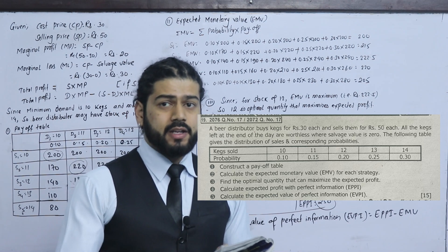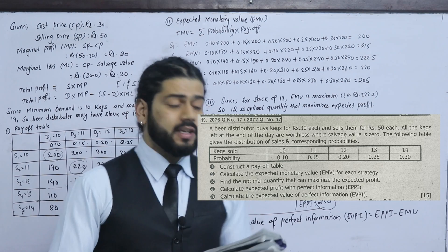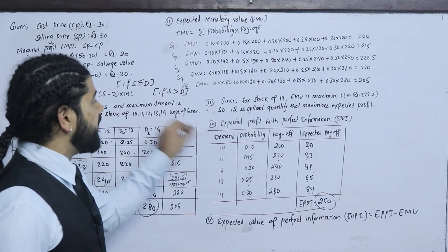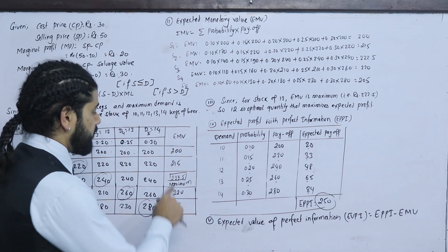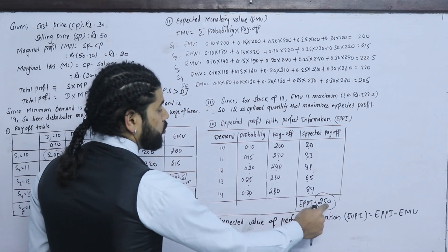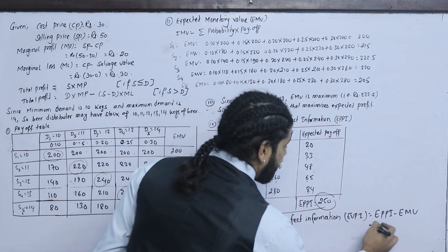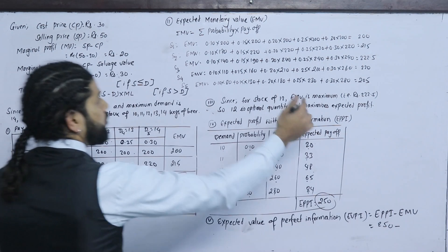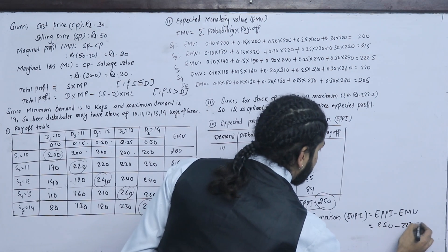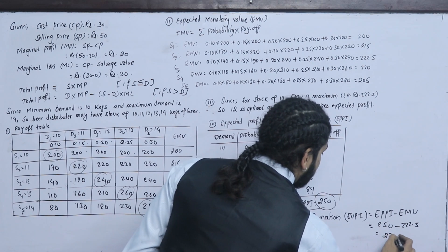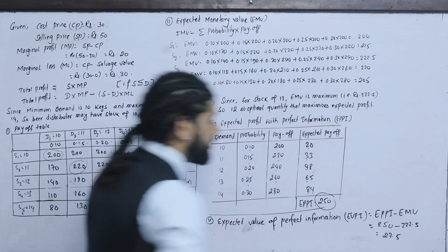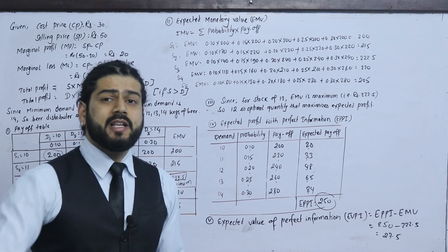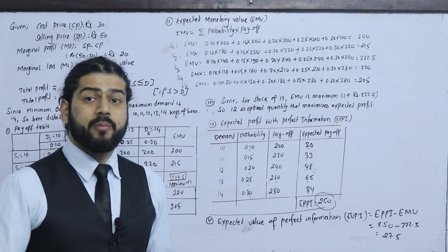The Expected Profit with Perfect Information (EPPI) is 250. The Expected Value of Perfect Information (EVPI) equals EPPI minus maximum EMV, which is 250 minus 222.5 equals 27.5.